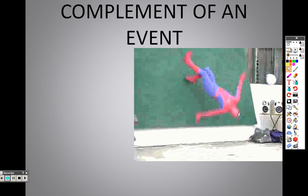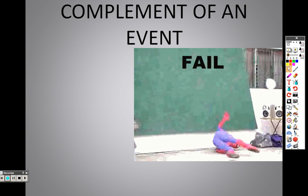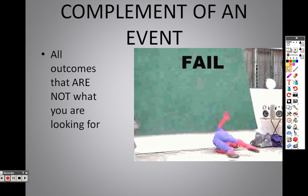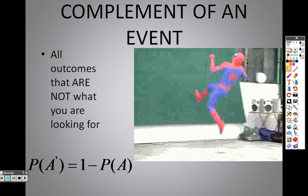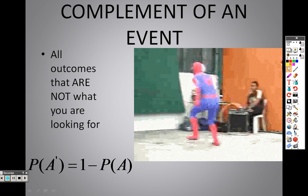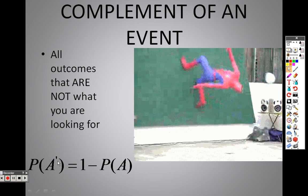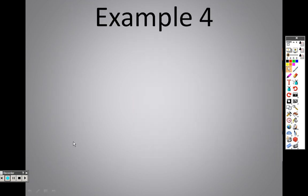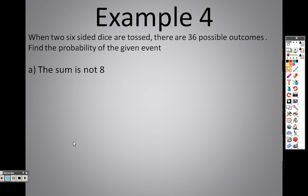So the complement of an event, all outcomes that are not what you are looking for, basically. You're looking for the opposite of an event. That little knob here, that little thing right there, that means complement if you see that. So the example says, when two six-sided dice are tossed, there are 36 possible outcomes. What's the probability of the given event that the sum is not an 8?